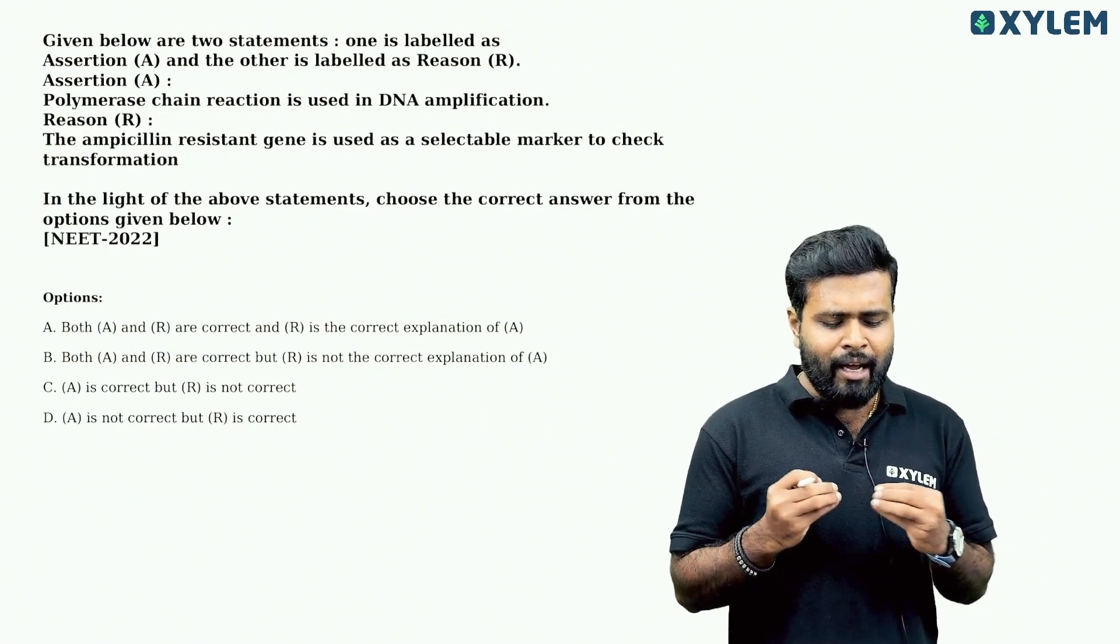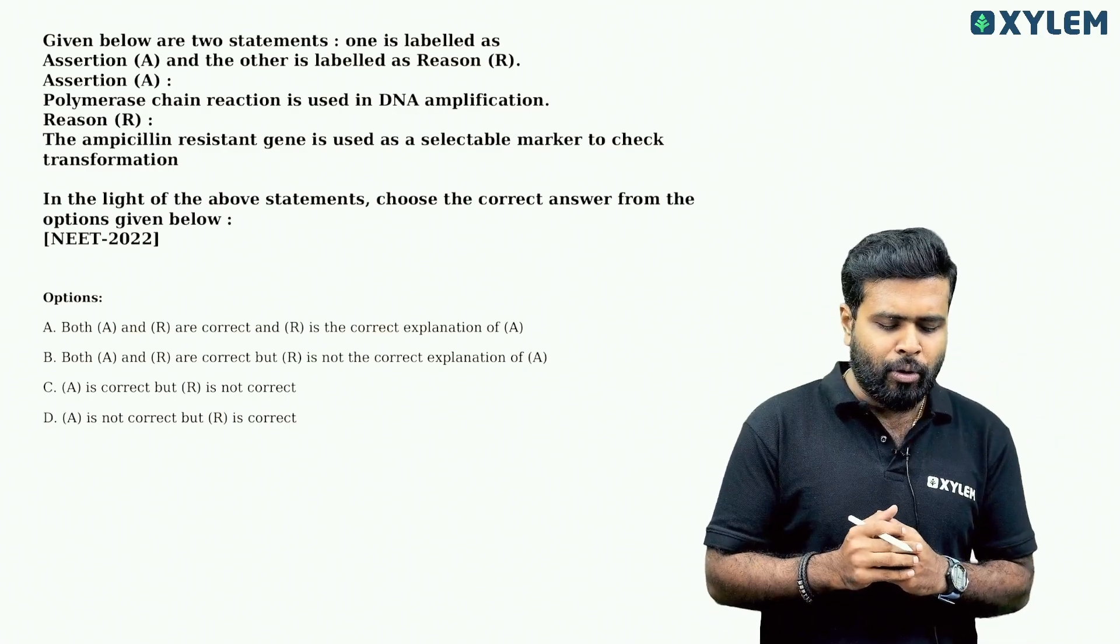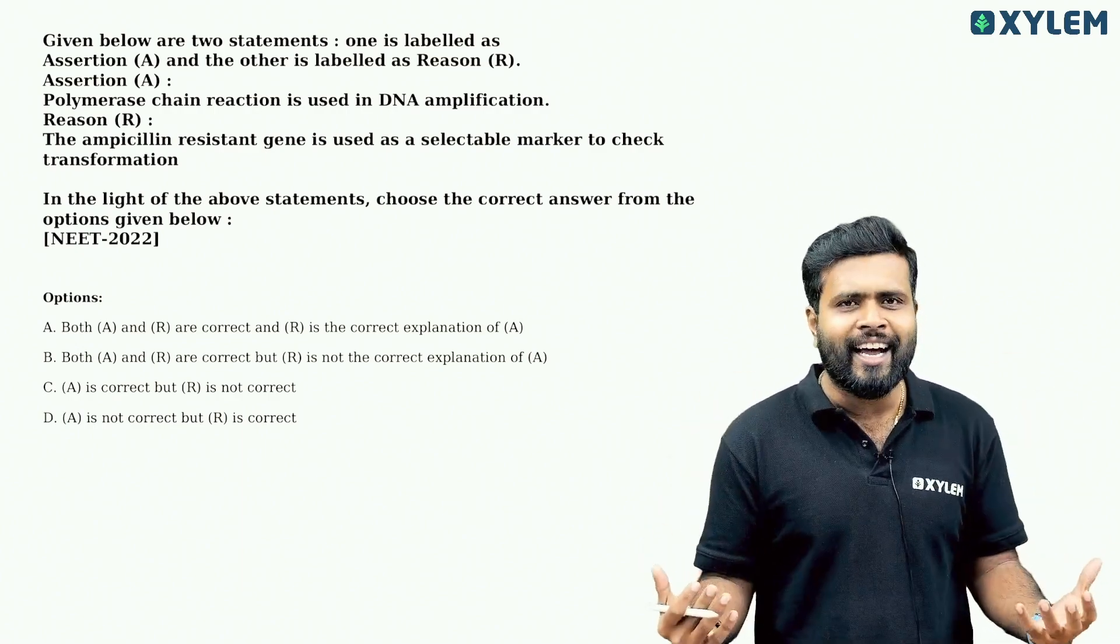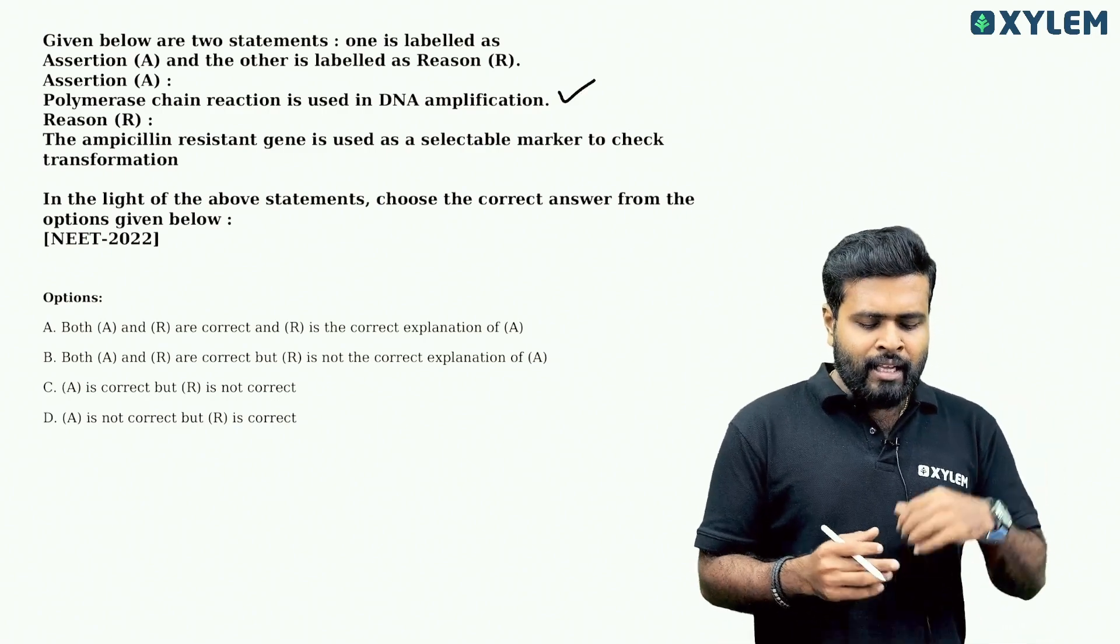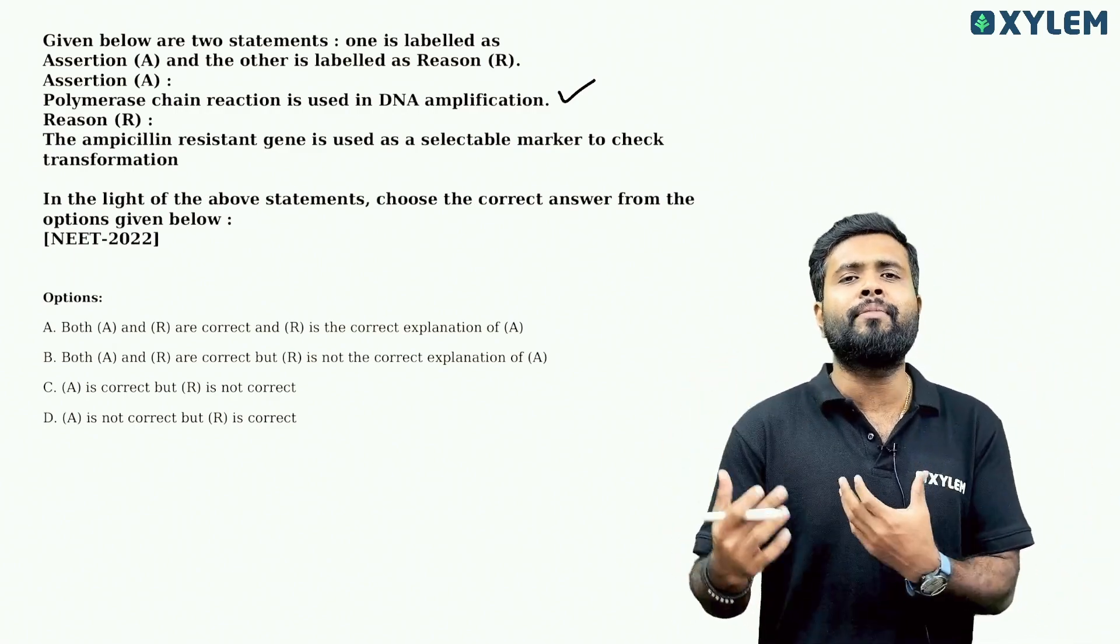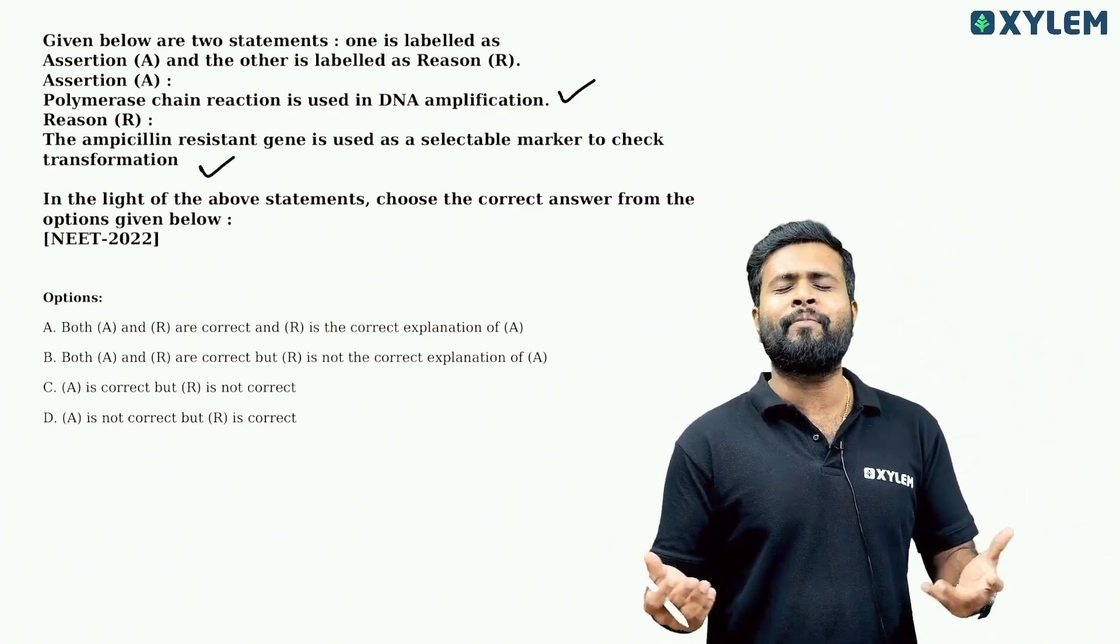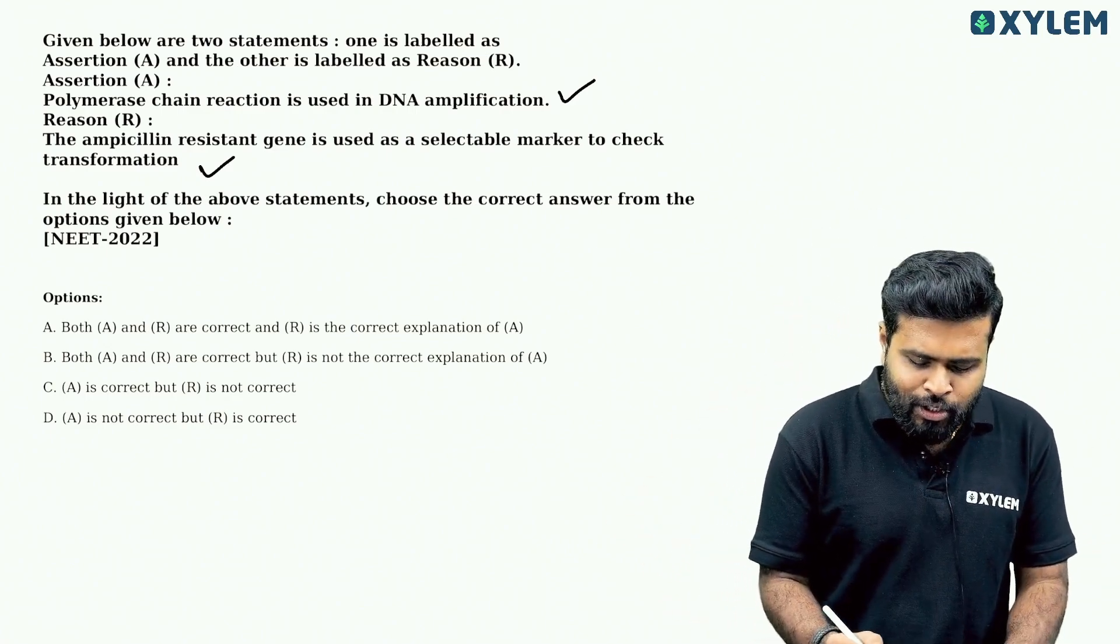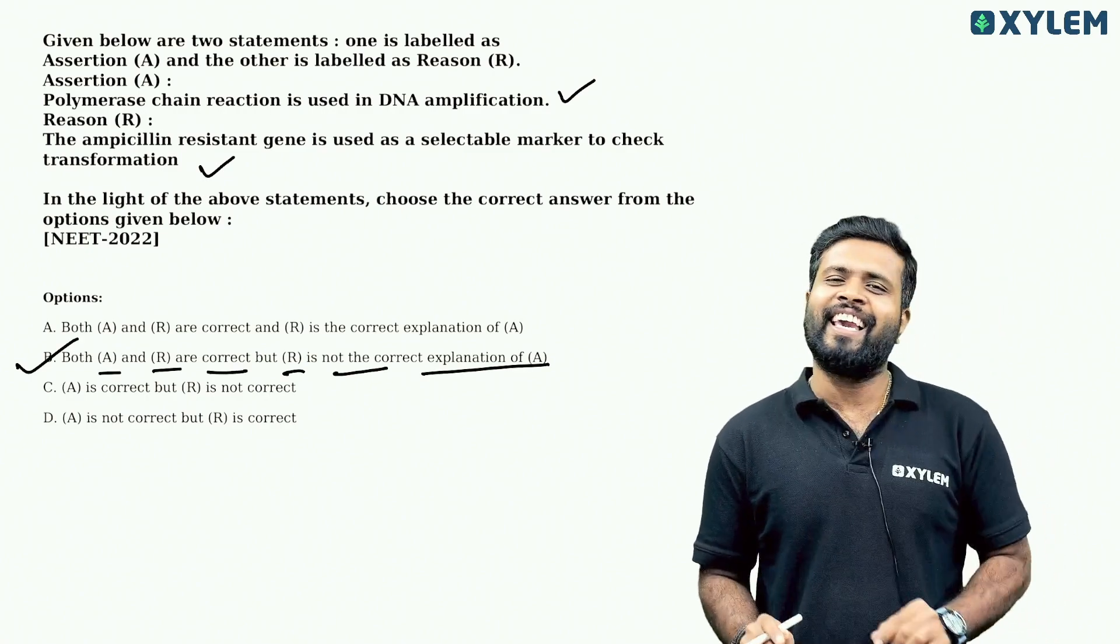Next question. Given below are two statements. One is labeled as assertion and the other as reason. Assertion: Polymerase chain reaction is used in DNA amplification. Yes, DNA is copied using PCR - that statement is correct. Reason: The ampicillin resistant gene is used as selectable marker to check transformation. That statement is correct, but there is no connection. Both A and R are correct, but R is not the correct explanation of A. Option B is the right answer.